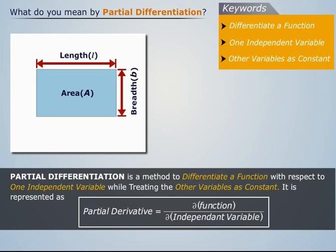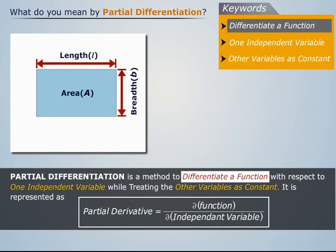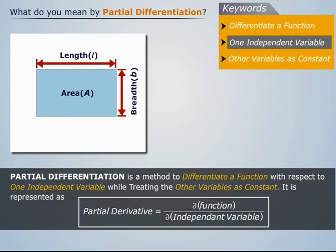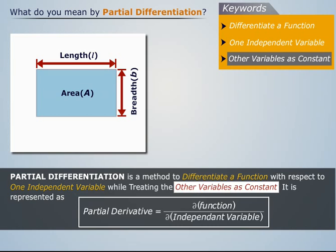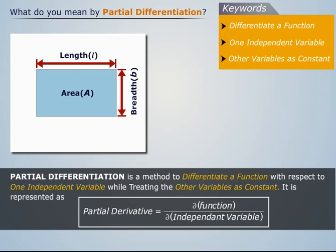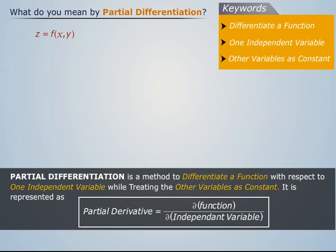Thus, partial differentiation is a method to differentiate a function with respect to one independent variable while treating the other variables as constant. It is represented as ∂(function)/∂(independent variable). To understand partial differentiation more clearly, let's consider a function f(x,y).